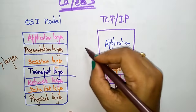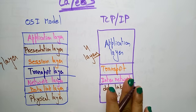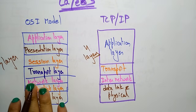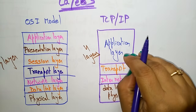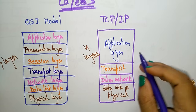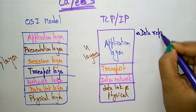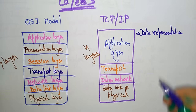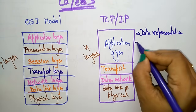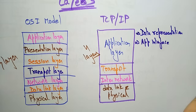The application layer in TCP/IP is mainly used for data representation, dialogue control, and application interface access.